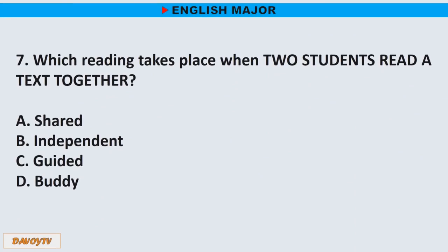Question number 7. Which reading takes place when two students read a text together? A. Shared. B. Independent. C. Guided. D. Buddy. The correct answer is letter D. Buddy.